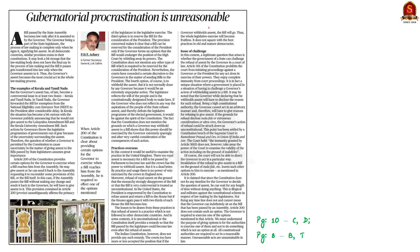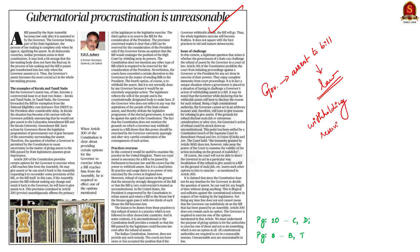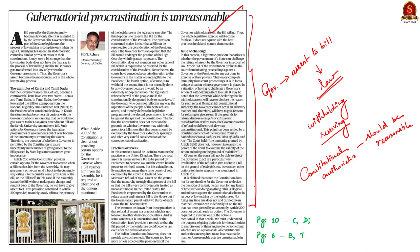This editorial article talks about the governor's assent to a legislative bill — done to make the bill into a law. The news here talks about governors of some states who are delaying that assent, either by withholding their assent or by reserving the bill for the president. All constitutional authorities are required to act in a reasonable manner, and the question arises: is this kind of unreasonable procrastination constitutional? This is the crux of this editorial article.